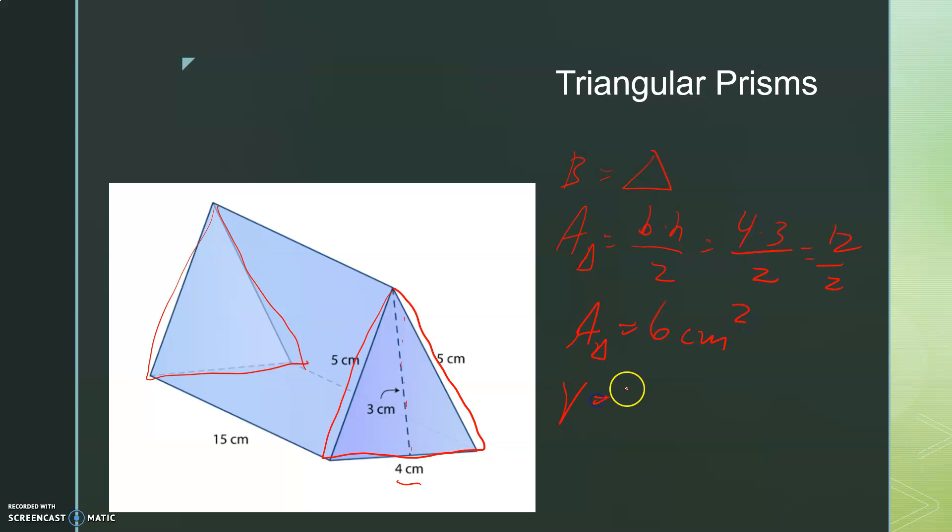Now, I take the volume by doing big B base times big H height. The big B base was this whole triangle, which was 6 square centimeters, times the height, which was 15 centimeters. Quick side math, 15 times 6, should be 90 cubic centimeters. Now, notice, we did not use this 5 or this 5. For the sake of finding volume, those are distractor numbers.